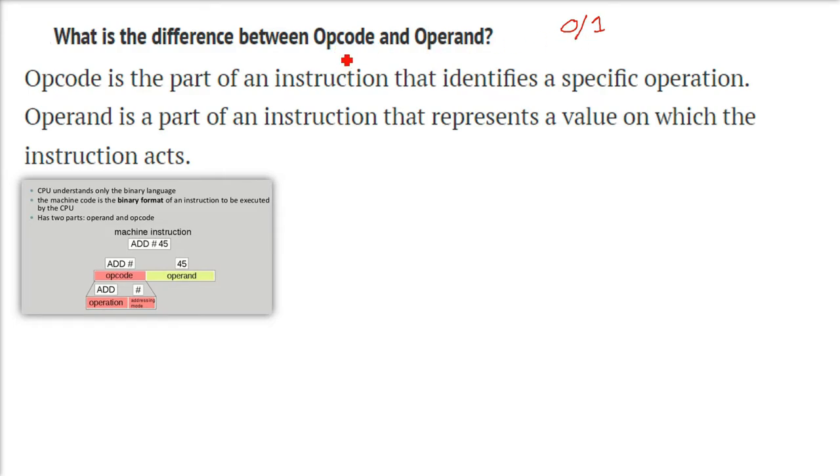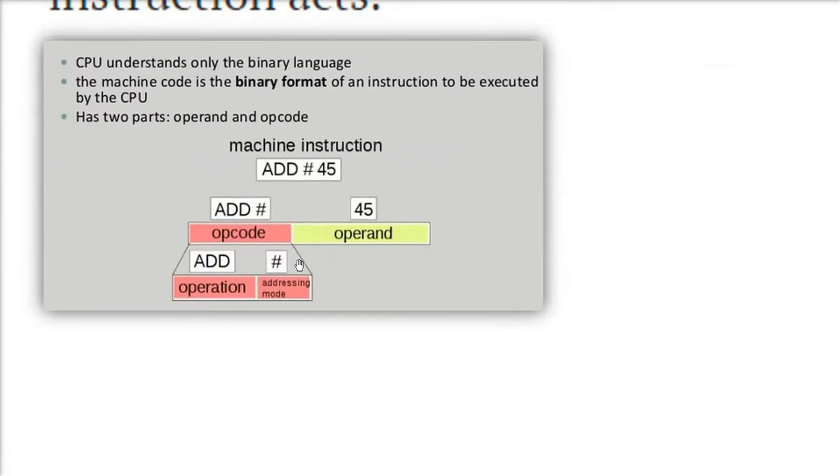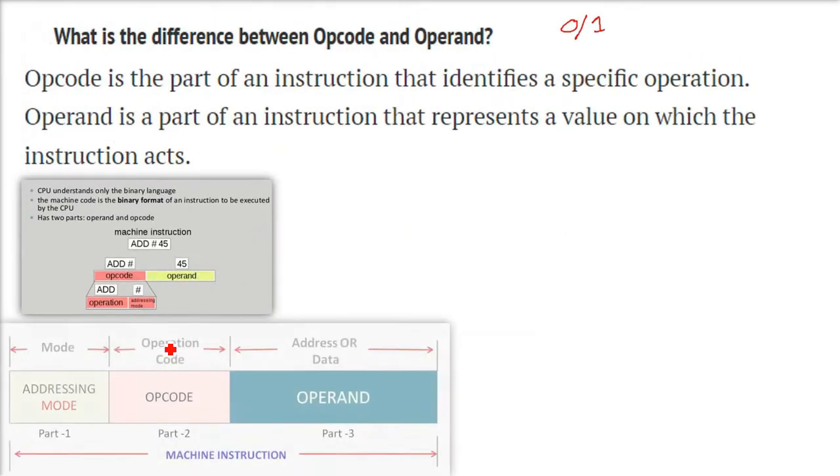So this instruction has two parts. Any instruction will have two parts. For example, you have this ADD and then 45. So this ADD, what is this hash? The op code, the first part is by itself telling what kind of addressing mode it is going to use. So there are five types of addressing mode: direct, implied, indirect like that. But it is working on what data that is indicated by operand.